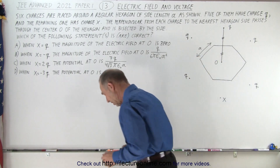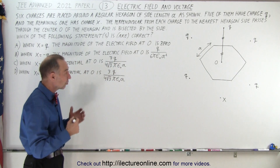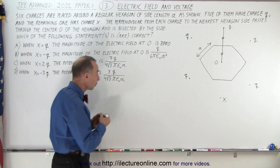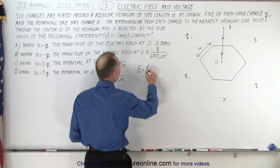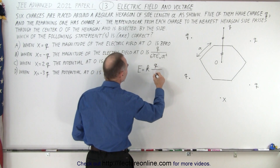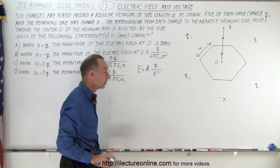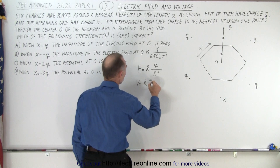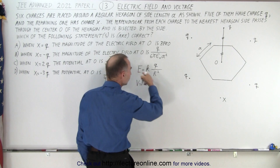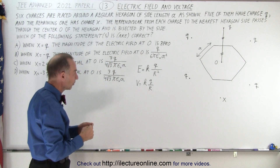This is actually not that difficult of a problem — you can probably do this one in three minutes. You just need to remember the two equations: the electric field magnitude equals KQ divided by the distance squared, and the voltage equals KQ over R. With the electric field, direction is important.